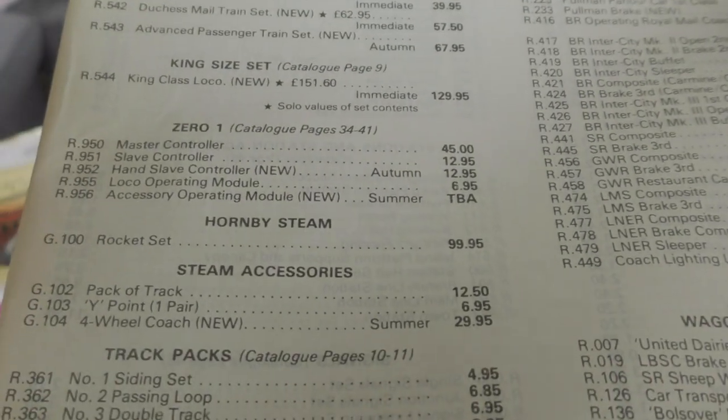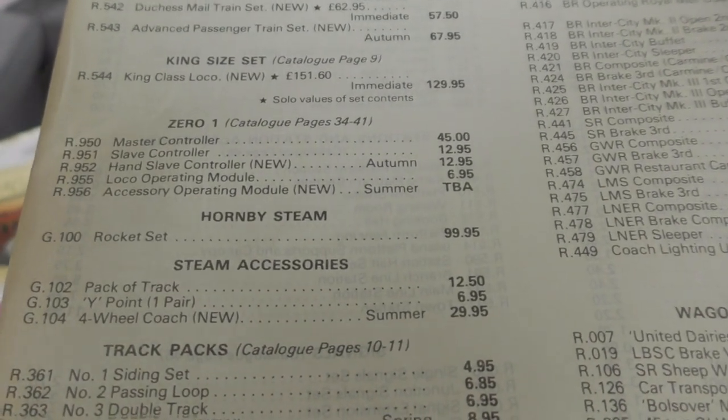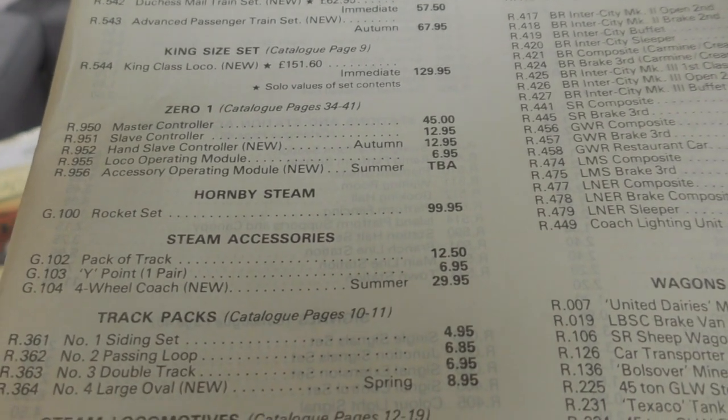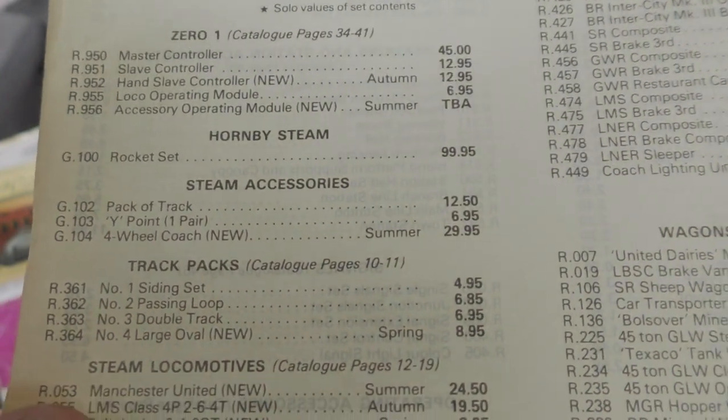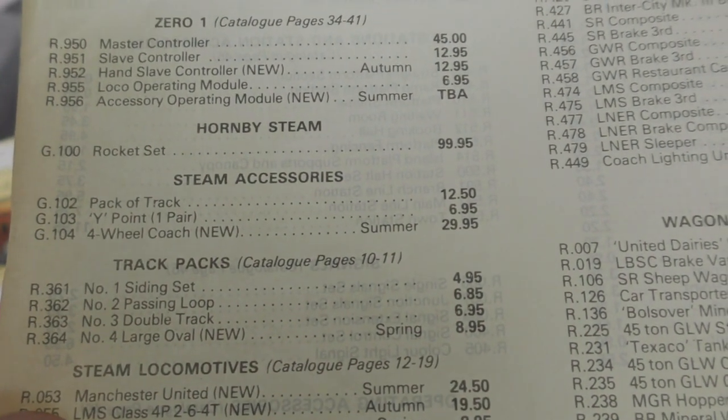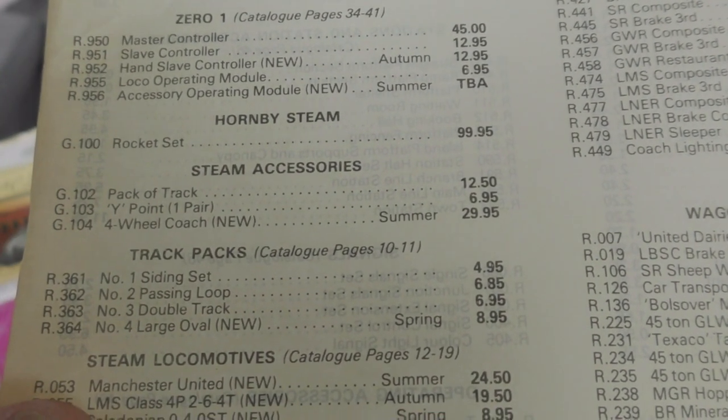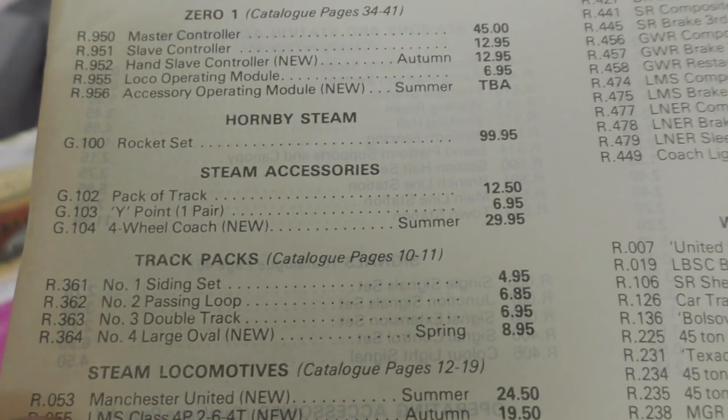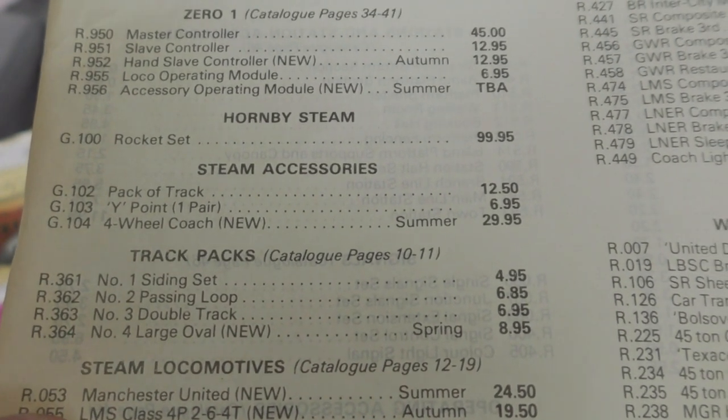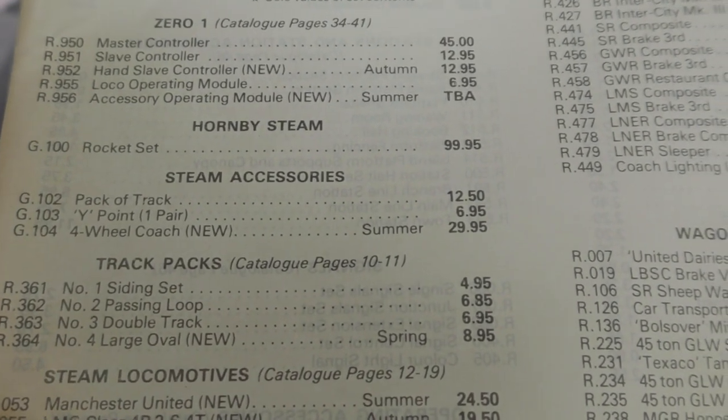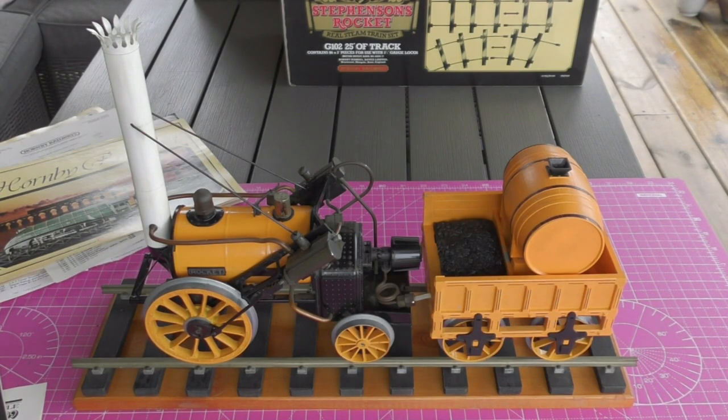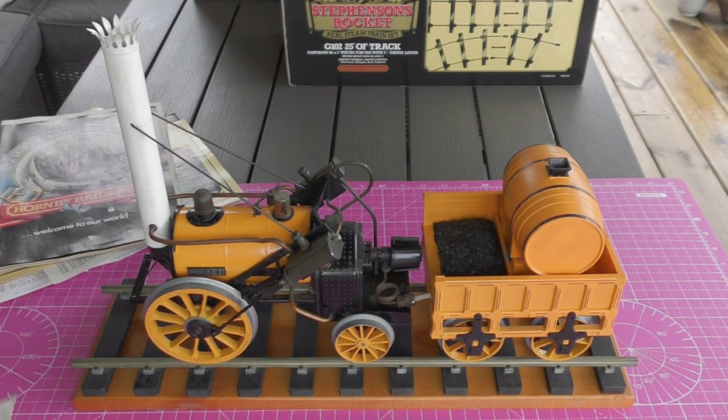And the track's up to £12.50, points £6.95, and there the coach is mentioned, new available in the summer of 1980, it's £29.95. That's all the paperwork I have publicity wise for this model but I have got these really impressive instructions.